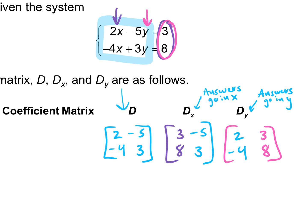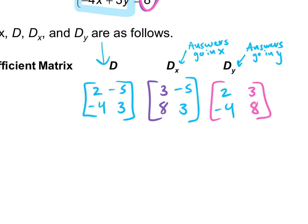So let's find the determinant of each. Starting with our coefficient matrix — to find the determinant we do majors minus minors. So 2 times 3 would be 6, minus negative 4 times negative 5 would be 20. And 6 minus 20 would be negative 14. Now let's find the determinant for D sub X: majors minus minors. 3 times 3 would be 9, minus 8 times negative 5 would be negative 40. So this would give us 49.